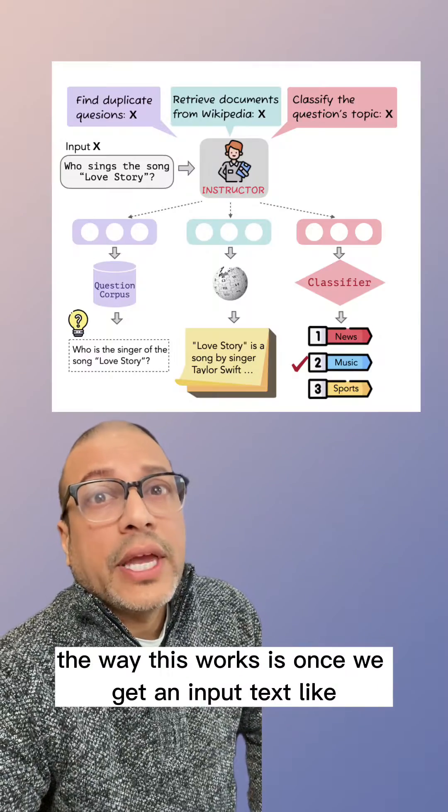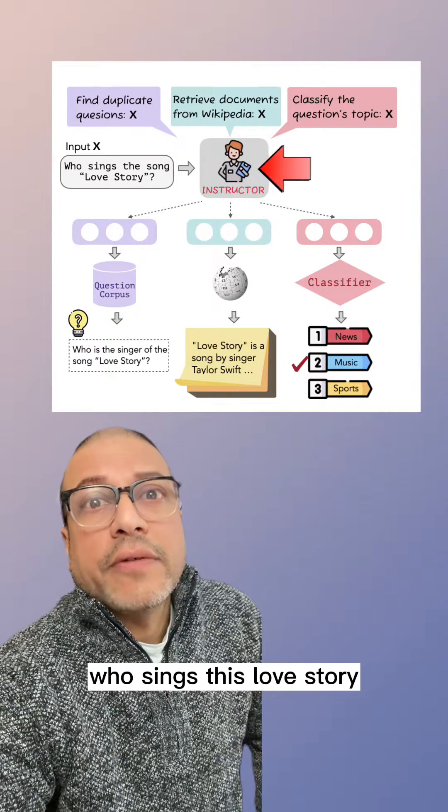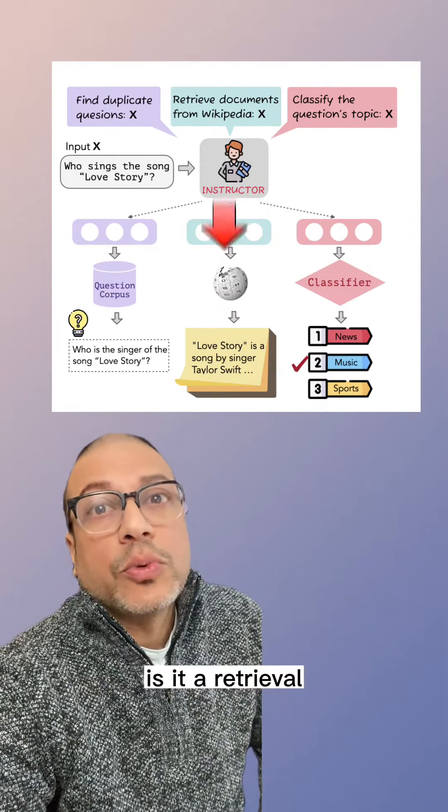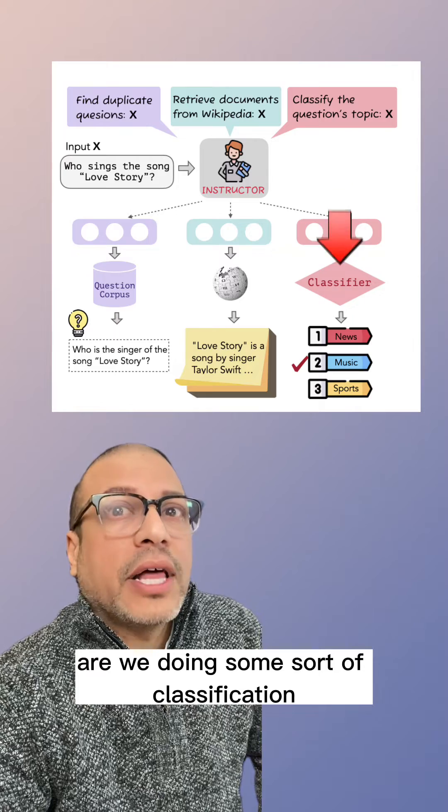The way this works is once we get an input text like 'who sings this love story,' we ask what kind of task is this? Is this question answering? Is it retrieval? Are we doing some sort of classification? That's going to affect the final embedding.